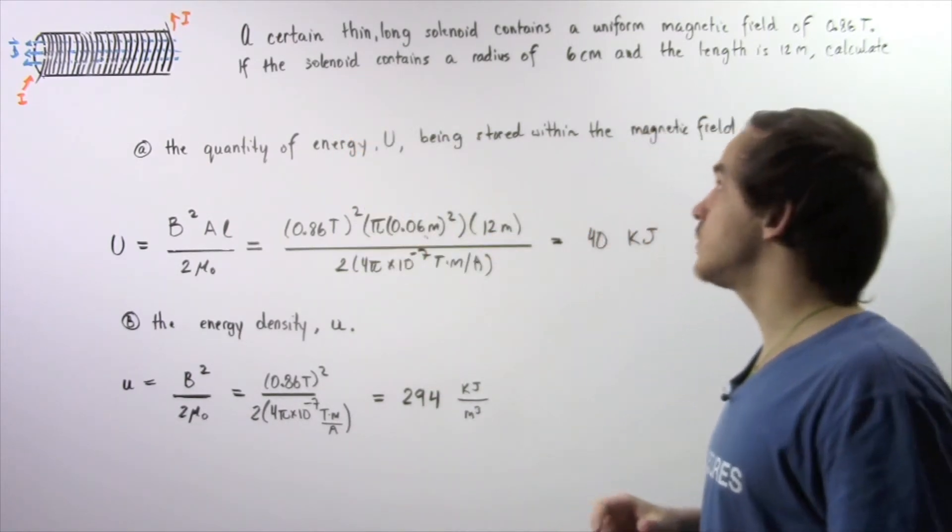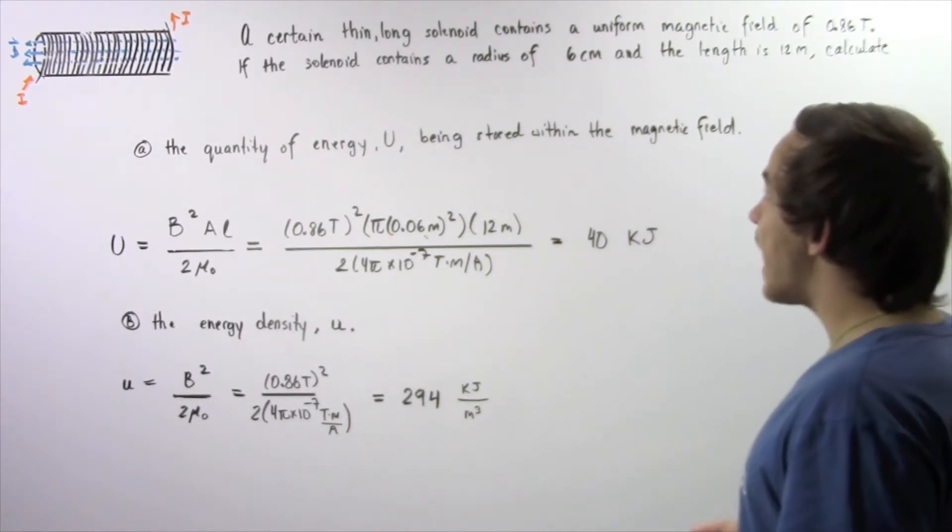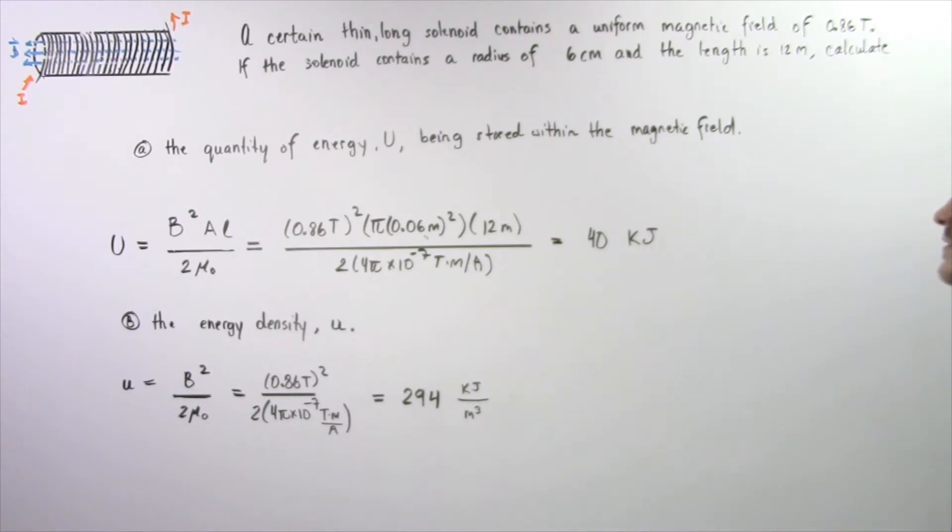Let's suppose a certain very thin long solenoid contains a uniform magnetic field of 0.86 teslas. If the solenoid contains a radius of 6 cm and the length is 12 m,